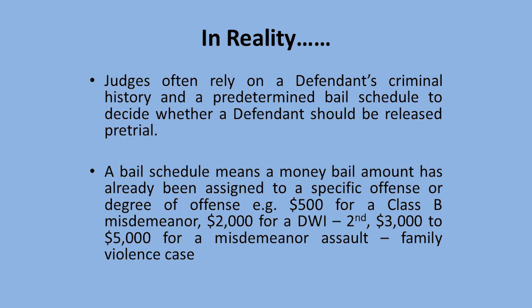A bail schedule means that the judges have gotten together, looked at different types and degrees of offenses, and predetermined the amount that will be applied for that particular offense. For example, a Class B misdemeanor may have a recommended bail of $500. For a DWI second, the recommended bail may be $2,000. For a misdemeanor assault family violence case, the recommended bail may be anywhere from $3,000 to $5,000. Of course, the judge can always deviate from that, but my experience has been that judges often stick with the bail schedule.